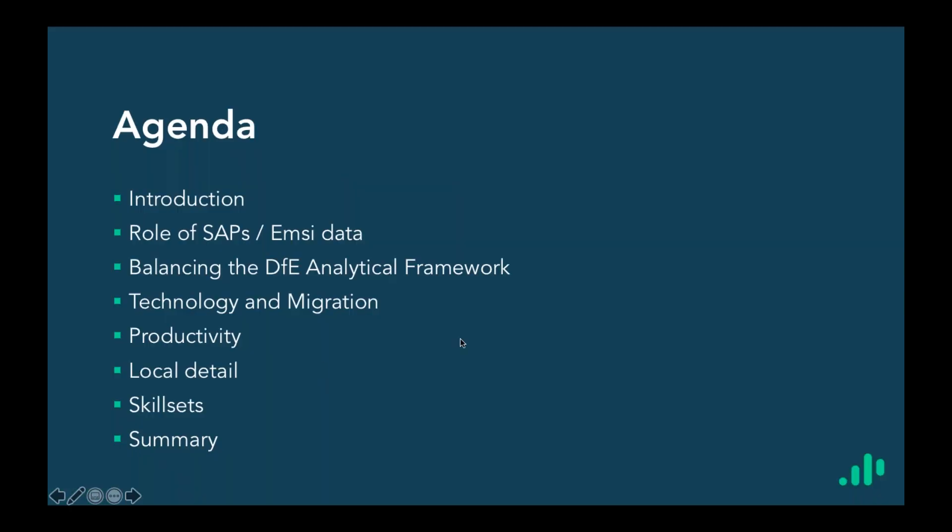So the agenda: we'll have a quick look at the role of SAPs and EMSI data. Then we get on to balancing the DFA analytical framework — what scope there is to look at broader questions and broader context, and how that applies potentially to other pieces of work, for example around the localization of the industrial strategy. We'll look at technology and migration including automation, productivity down to a town level, some skill sets or clusters of skill sets using our job posting analytics, and then a summary at the end.